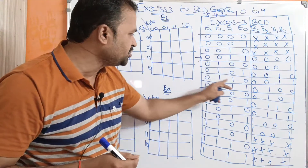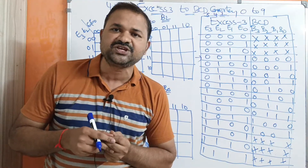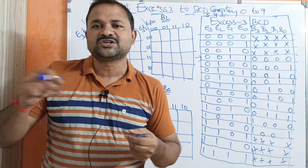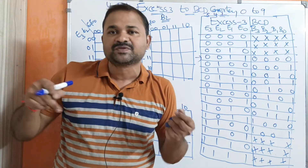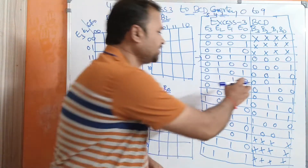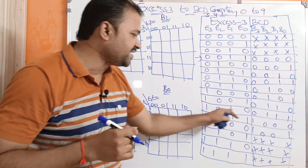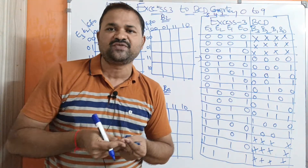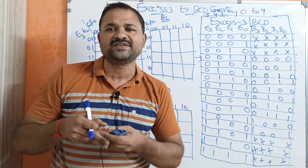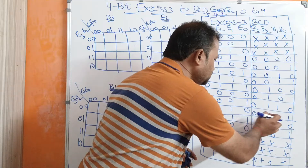Let us take the next number, 00110, which is 6. In order to get BCD, subtract 3: 6 minus 3 means 3. How to write 3 in binary notation? 0011. If you take 10 — 1010 means 10 — so 10 minus 3 means 7. How to write 7 in binary notation? 0111. So that is nothing but BCD code: 0111.